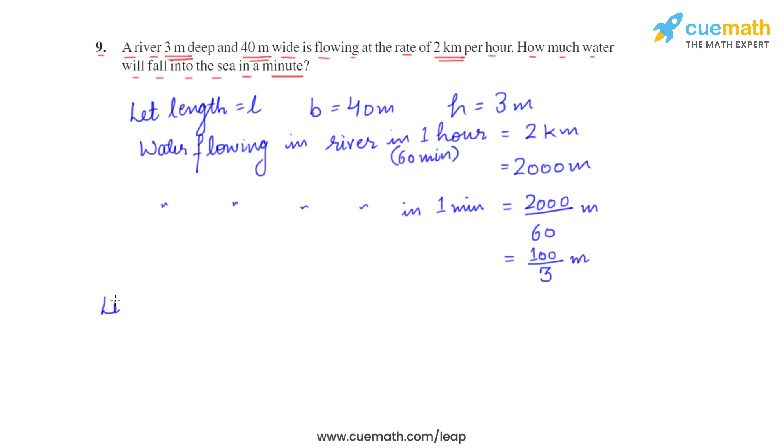This length of water is flowing in the river in one minute, so length comes out to be 100 by 3 meters. Now we have breadth and height, so let's find the volume of water. We have found the length of water flowing in the river in one minute.